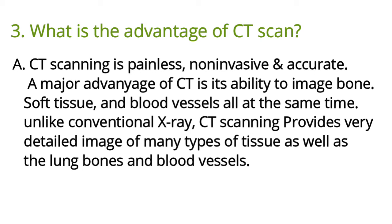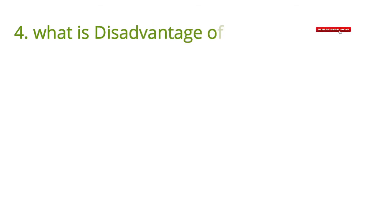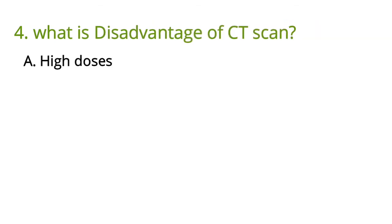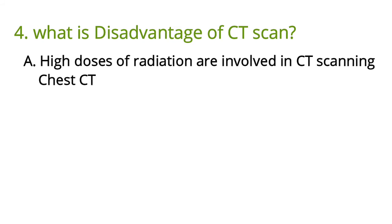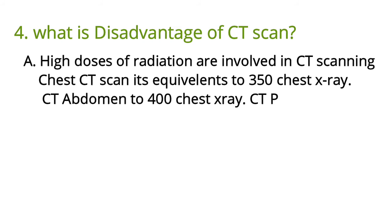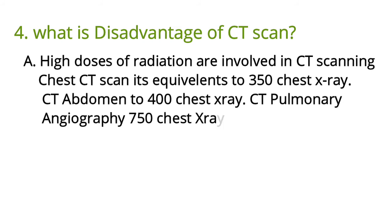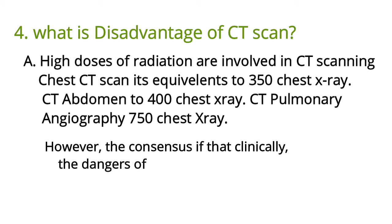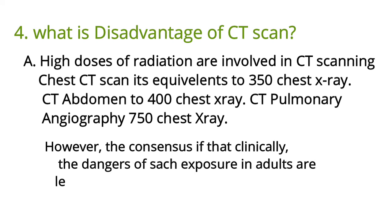Question number four: What is the disadvantage of CT scan? Answer: High doses of radiation are involved in CT scanning. A chest CT scan is equivalent to 350 chest X-rays, CT abdomen to 400 chest X-rays, and CT pulmonary angiography to 750 chest X-rays.